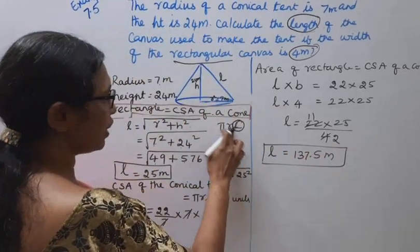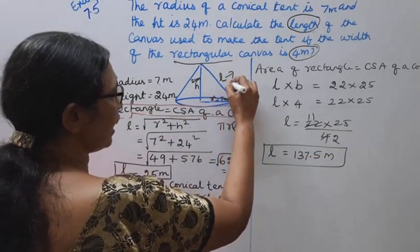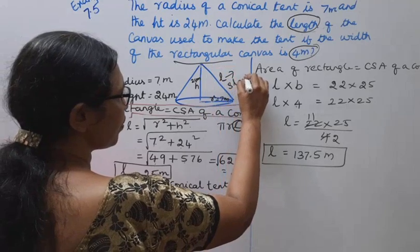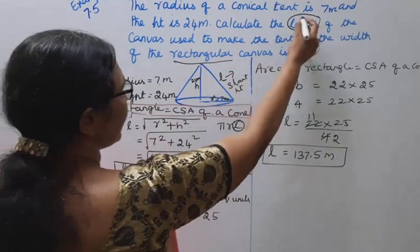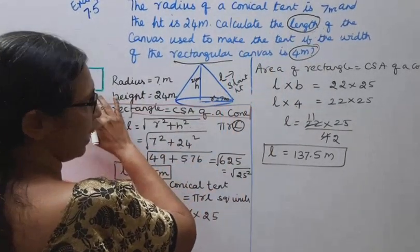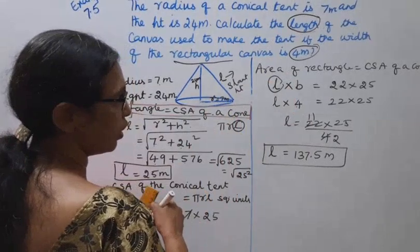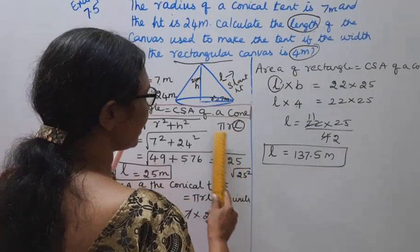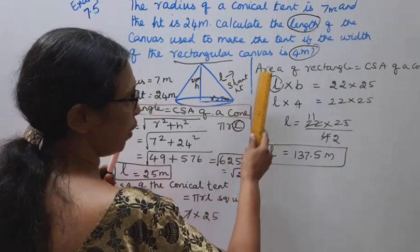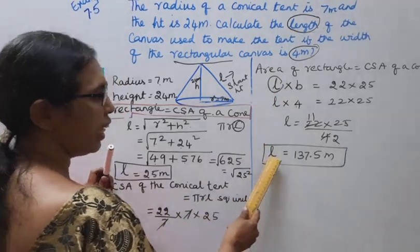This CSA = πRL, where L is the slant height of the cone. This is the length using area of rectangle. These are the same.